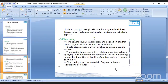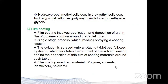Coming to film coating. Film coating involves application and deposition of a thin film of polymer solution around the tablet core. It is a single-step process which involves spraying a coating solution on the tablets. The solution is sprayed onto a rotating tablet bed followed by drying, which facilitates the removal of the solvent leaving behind the deposition of a thin film around each tablet. Film coating uses raw materials like polymers, solvents, plasticizers, and colorants.